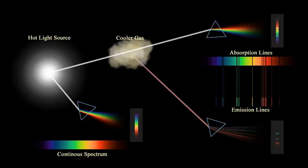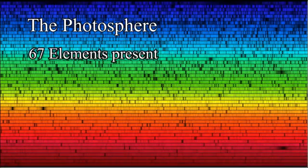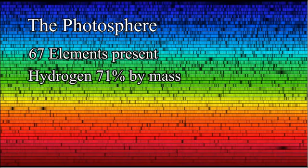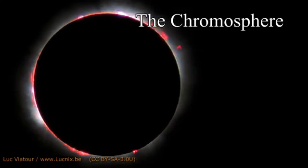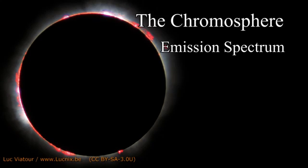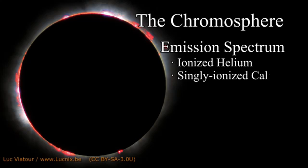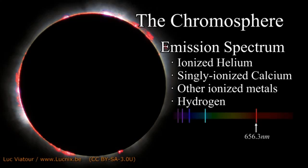The dark absorption lines in the sun's spectrum tell us about the elements in the upper regions of the photosphere. Sixty-seven different elements are found, with the most abundant being hydrogen at 71% by mass and helium at 27.1% by mass. Above the photosphere and visible during a total eclipse is the chromosphere, a glowing pinkish layer of gas. Unlike the absorption spectra of the photosphere, the chromosphere produces an emission spectrum that reveals hydrogen, singly ionized calcium, ionized helium and ionized metals. The hydrogen alpha emission at 656.3 nanometers is what gives the chromosphere its pink color.